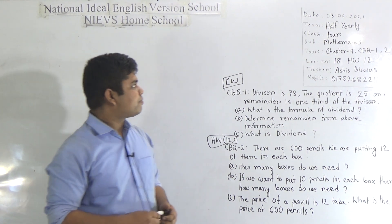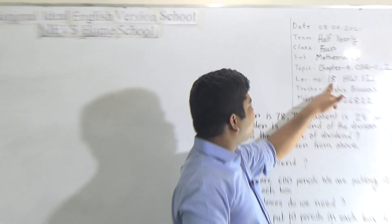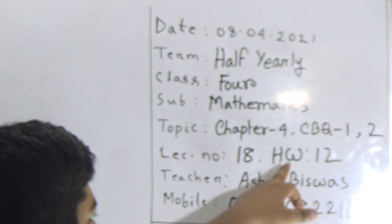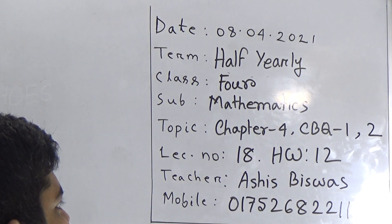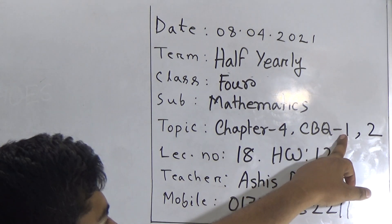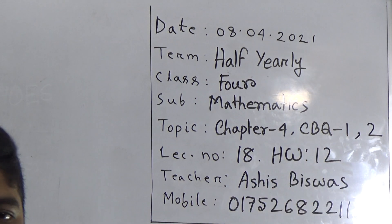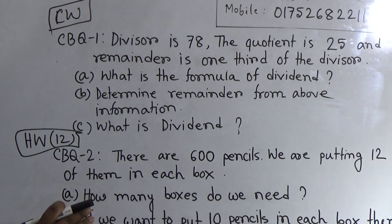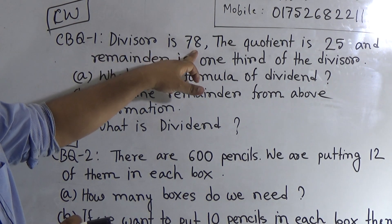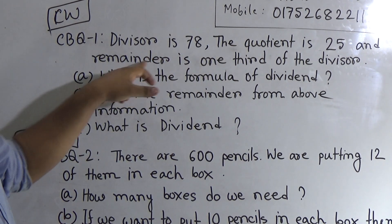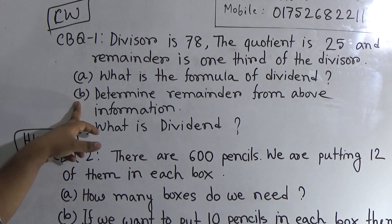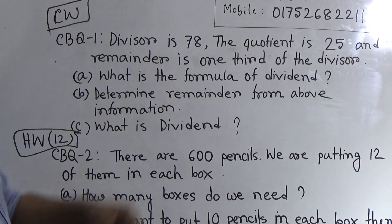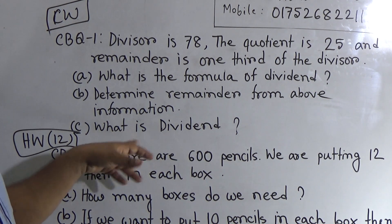Let us start our class. Today is our Lesson Number 18 of half yearly, and today's homework number will be 12. The name of the topic is Chapter 4: Division. From this chapter, today we shall solve CBQ Number 1, and CBQ Number 2 will be your homework. In CBQ 1: divisor is 78, quotient is 25, and remainder is one third of the divisor. Part A: What is the formula of dividend? Part B: Determine the remainder from the above information. Part C: What is the dividend?